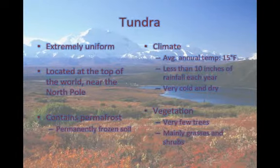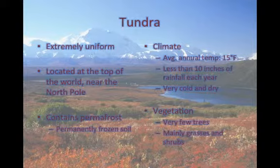The next terrestrial biome is the tundra biome. The tundra biome is extremely uniform. The tundra is located at the top of the world, near the North Pole. Tundras contain permafrost, which is permanently frozen soil. The climate of the tundra is annually about 15 degrees Fahrenheit. The tundra receives less than 10 inches of rainfall each year. A tundra is very cold and dry, with very few trees — mainly grasses and shrubs.